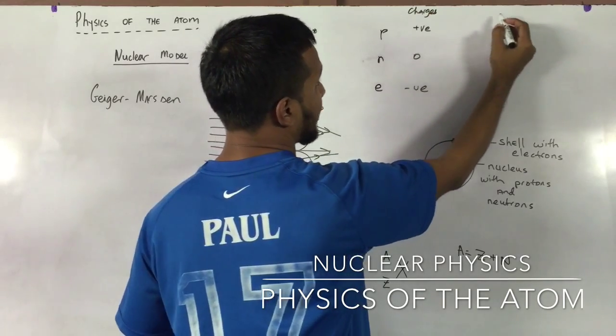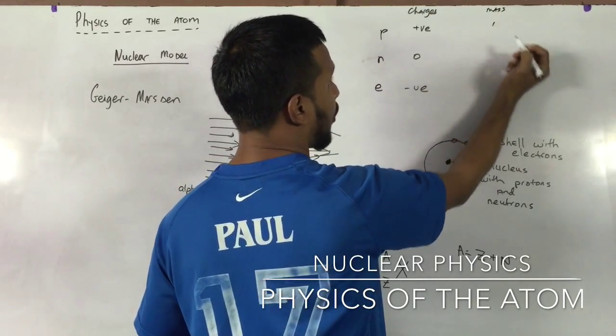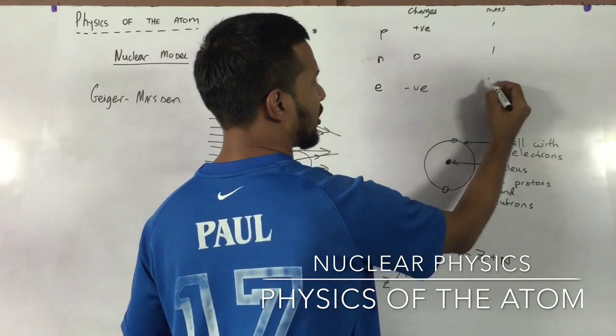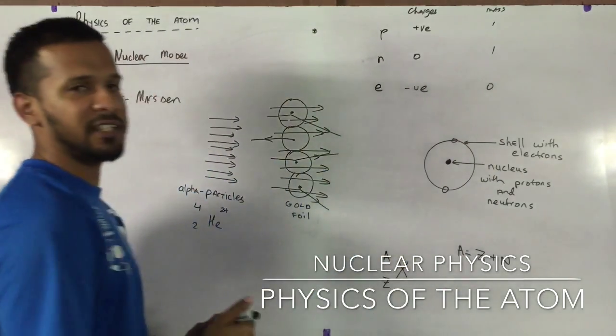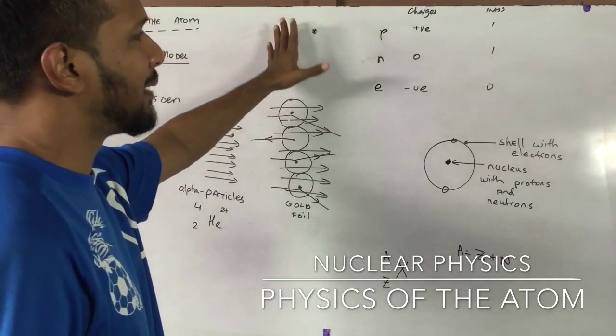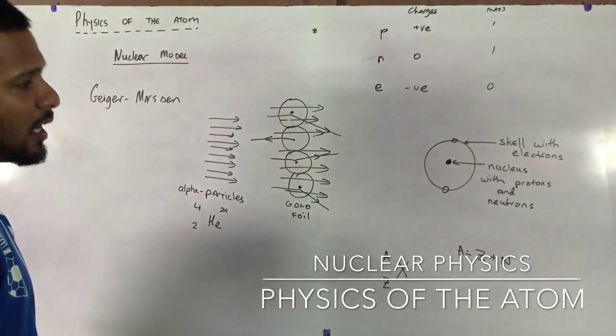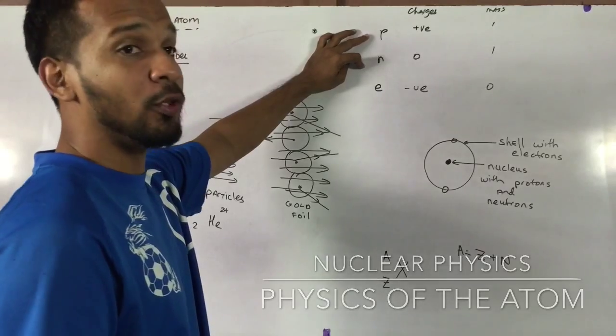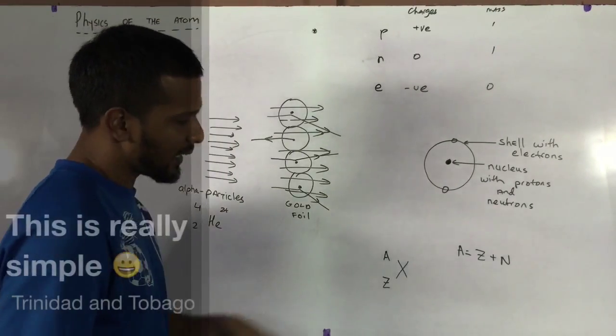Protons have a mass of, let's say, one. Neutrons, mass one. And electrons have a negative charge. We will consider it to be zero for now. So these three particles are the main particles that we're going to look at. And these particles, protons and neutrons, are called nucleons.